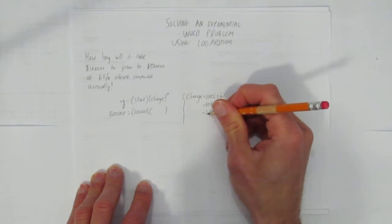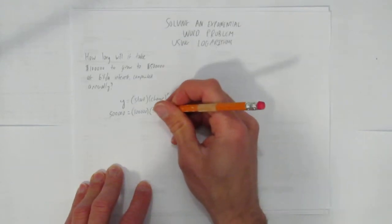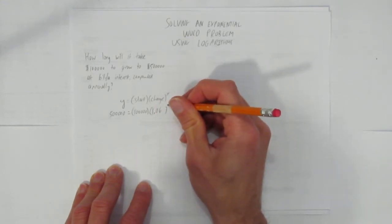And convert that to a decimal, it's 1.06. As in, you have 1.06 times your money every year. So I'll put that 1.06 in the change spot, all to the power of x.